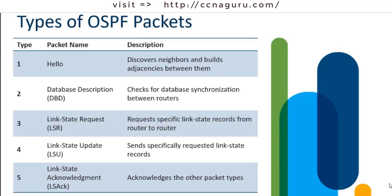The Type 4 is the Link State Update. This is what we send as a response to the LSR — someone sends you a link state request, you respond with a link state update. You're announcing either new information or sending what was specifically requested from the LSR you received.